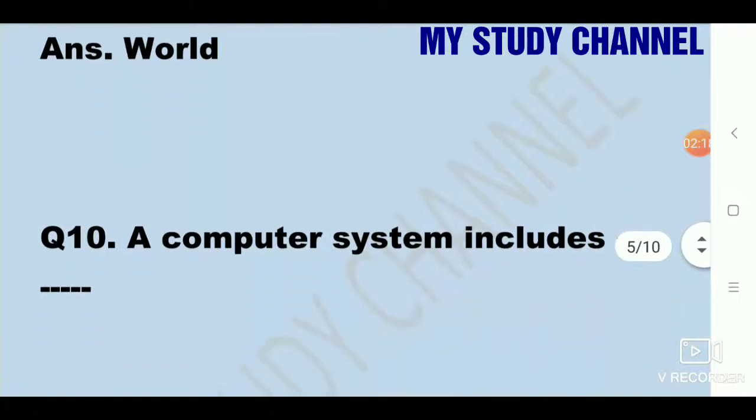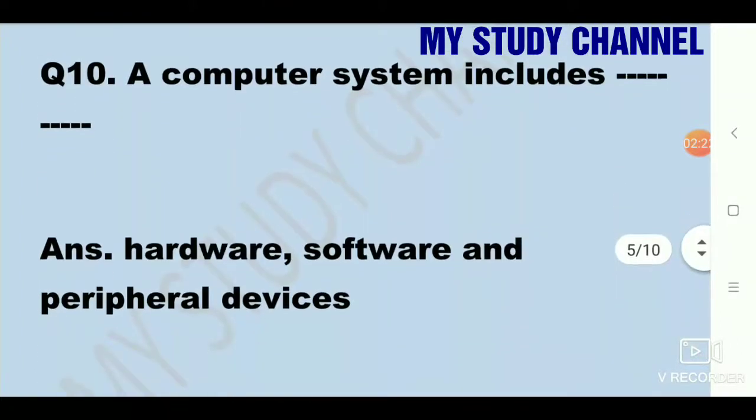Next is a computer system includes dash. Answer is hardware, software and peripheral devices. Peripheral devices are those devices which are attached to the computer. For example keyboard, printer. So a computer system includes hardware, software and peripheral devices.